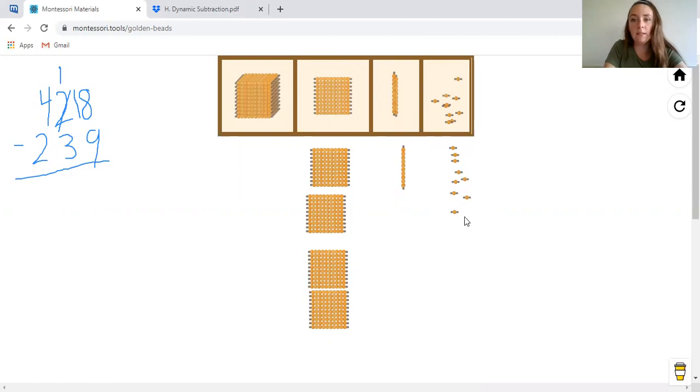And that leaves us with 1, 2, 3, 4, 5, 6, 7, 8, 9. So 18 minus 9 is 9.